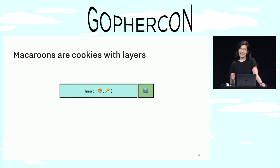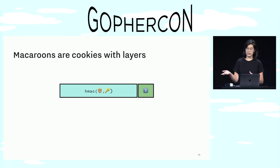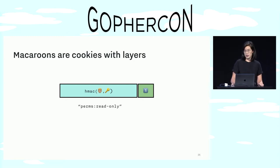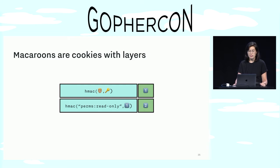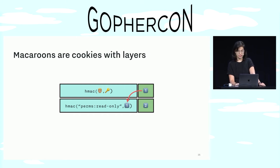So if we start with that same cookie from before — which is this HMAC construction — if we want to limit this credential so that it's read-only, we can create a new caveat, like this string, and then create a new HMAC with this caveat. In this new HMAC, the caveat is the request and the token from the original cookie is the hash key. And the result of this new HMAC is the credential that we can use in requests.